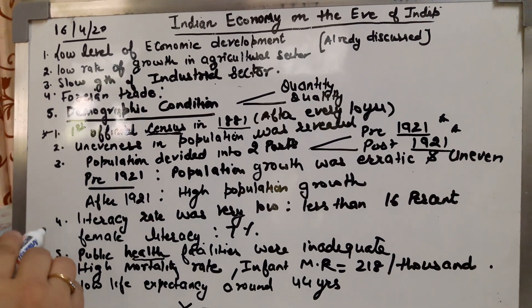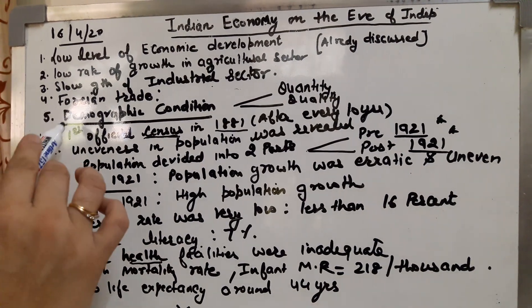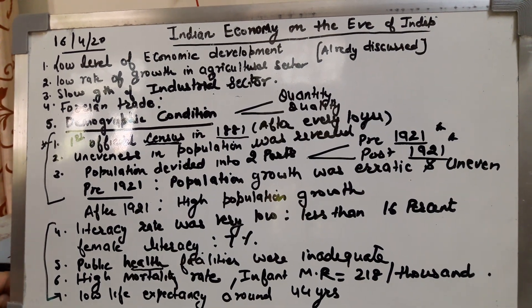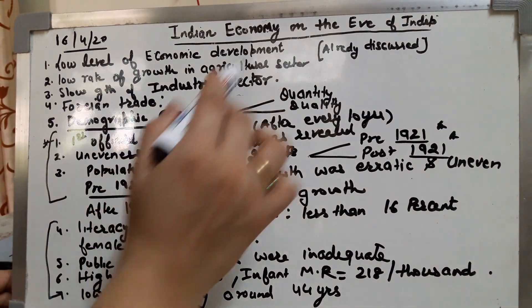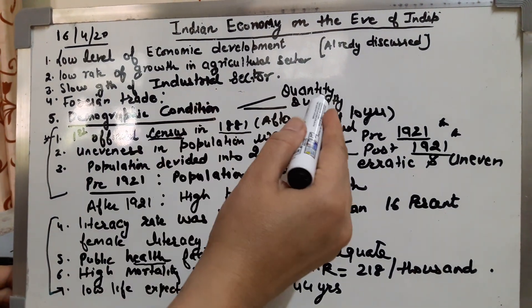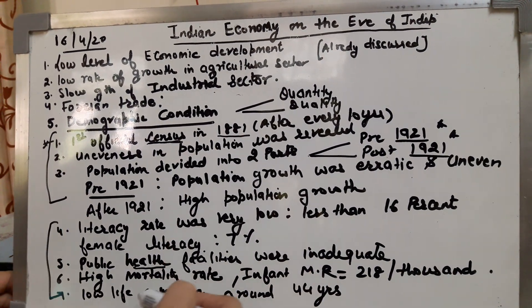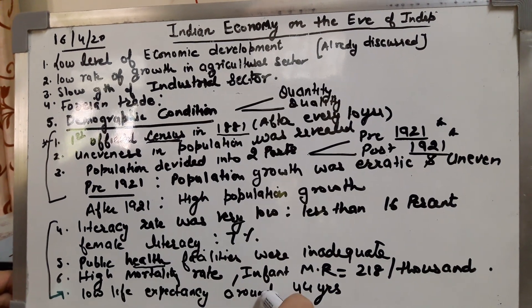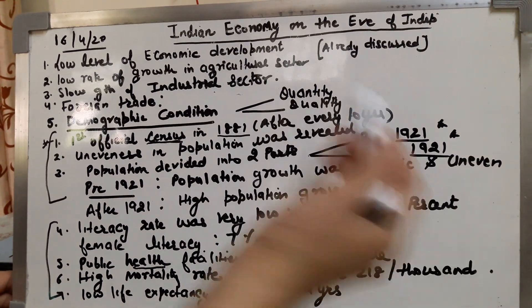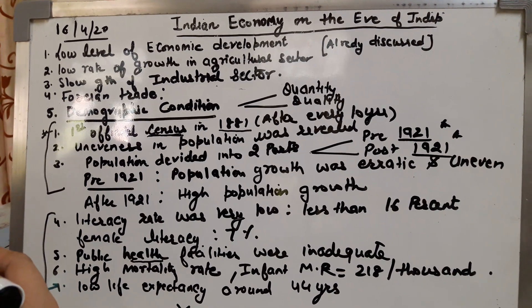These indicators on literacy, health, mortality, and life expectancy talk about the quality of population, while the earlier indicators talk about the pattern and quantity of population. If a question asks you to elaborate on the demographic condition at the time of independence, your answer should include both parts — quantity as well as quality — covering all these points. One-mark questions can be expected on specific data such as life expectancy, infant mortality rate, and the importance of the year 1921.